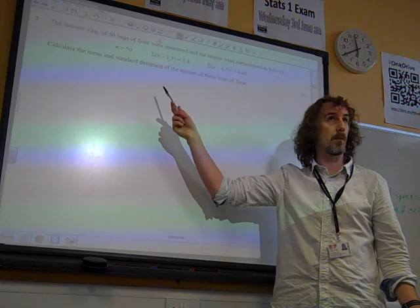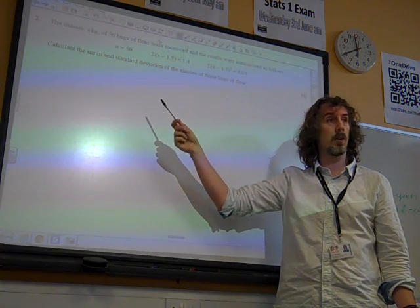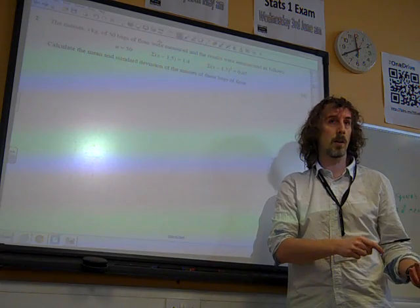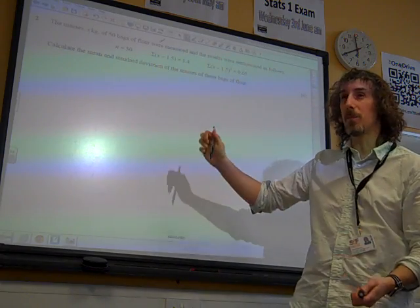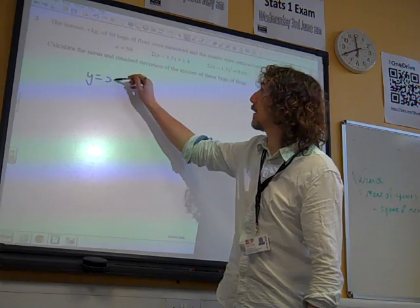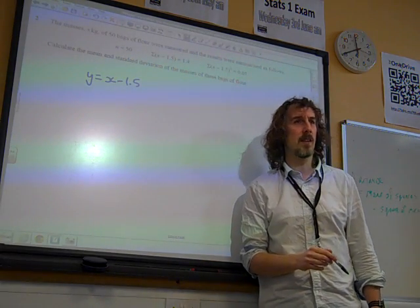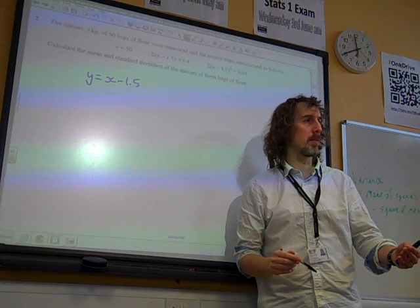Now, when we did this, it's a little time ago now, but we talked about the idea of coding and using coding. We tended to use another variable to represent the coding. Now, this is not an essential thing for doing this, but I might think, I would look at this and think I want to write y equals x minus 1.5. And then rewrite it in terms of y, and then convert it at the end to give my answer in terms of x.